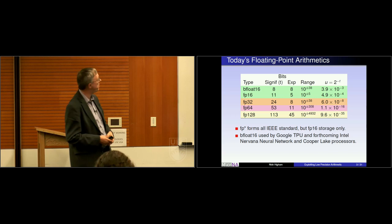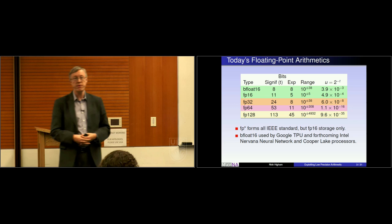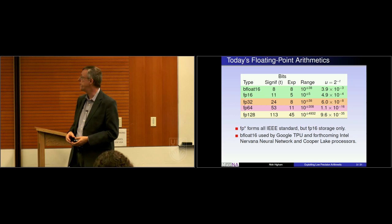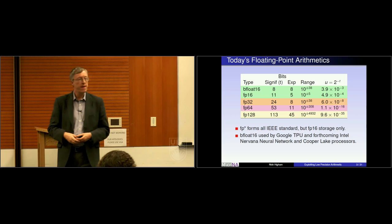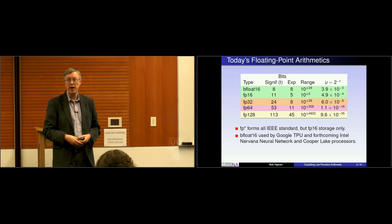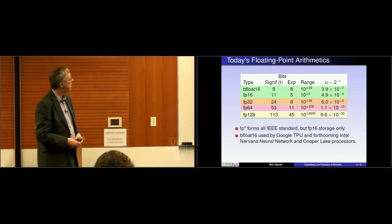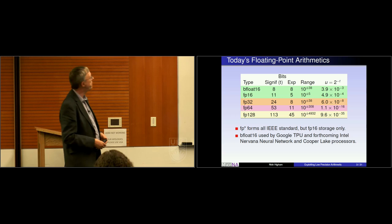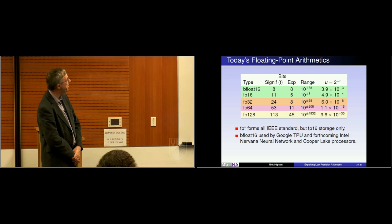What I'm showing in the table is the number of bits in the significand, including the implicit leading bit, and the number of bits allocated for the exponent. The little u in the last column is the unit roundoff — a measure of the precision of the arithmetic — equal to 2 to the minus t, where t is the number of bits in the significand, sometimes called the mantissa. The very first line, Bfloat16, is the Google format — I think the B stands for brain. Google originally defined it and uses it in TensorFlow; Intel have adopted it as well. Intel are going to be using Bfloat16 in a number of forthcoming processors, including some Cooper Lake processors. One thing to note is the huge differences in the range of these arithmetics — from 10 to the plus or minus 5 for FP16 to much larger ranges. Bfloat16 only corresponds to about 3 decimal digits worth of accuracy.